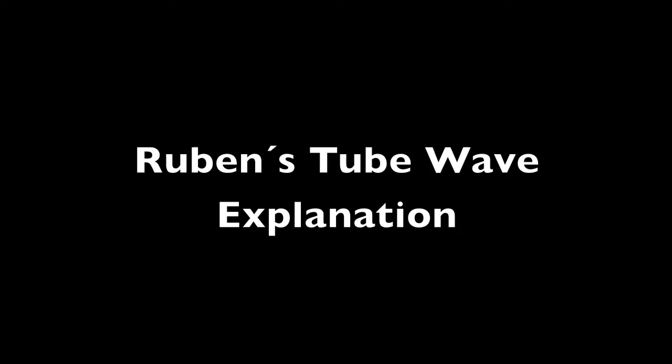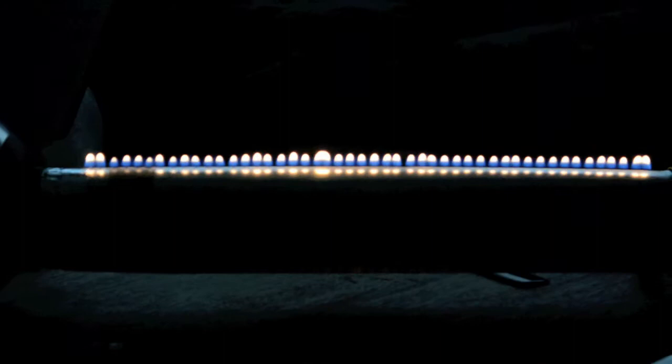What I'm about to show you is a Rubens tube. It's basically a tube with a bunch of holes in it connected to gas that acts like just a bunch of Bunsen burners, and I'm going to be playing my trumpet through it. So this is how it works.